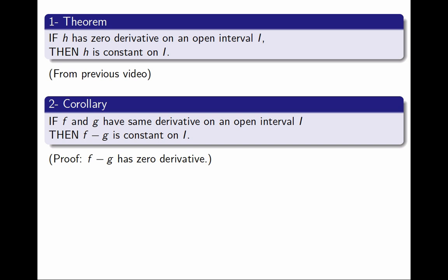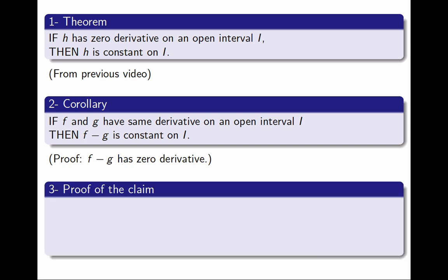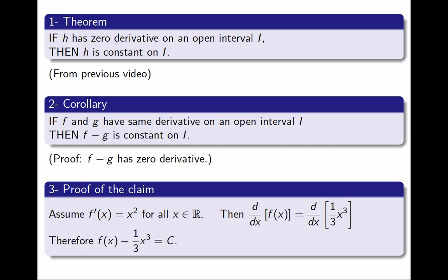How does this help me? Well, in the third step, I can prove the claim now. If I begin with a function f and I assume its derivative is x², then the derivative of this function is the same as the derivative of the function one-third of x³, and by the corollary, the two functions might differ by a constant, and that's exactly what I was trying to prove. So I was able to prove it, and it turns out it's true. I had all the solutions.